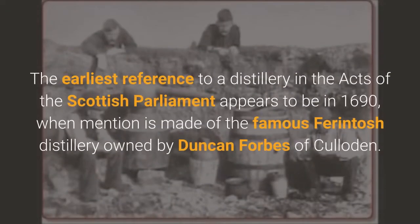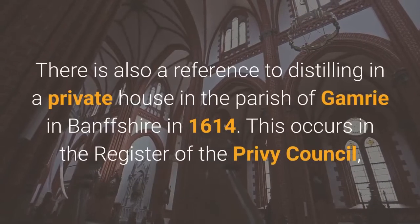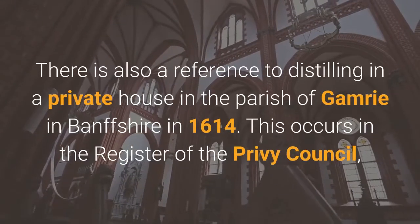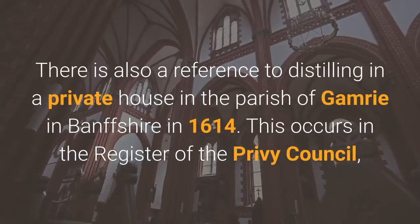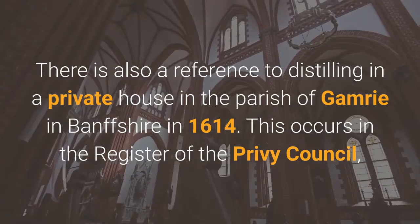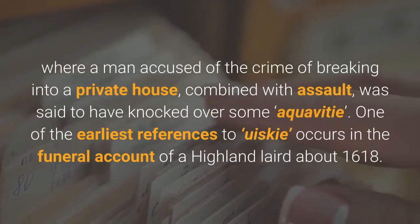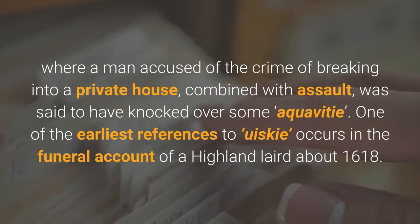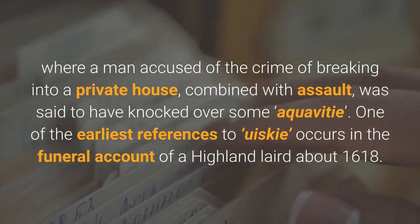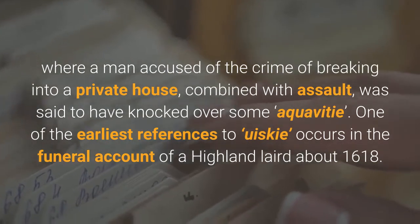The earliest reference to a distillery in the Acts of the Scottish Parliament appears to be in 1690, when mention is made of the famous Ferintosh distillery owned by Duncan Forbes of Culloden. There is also a reference to distilling in a private house in the parish of Gamrie in Banffshire in 1614. This occurs in the register of the Privy Council, where a man accused of the crime of breaking into a private house, combined with assault, was said to have knocked over some aqua vitae.